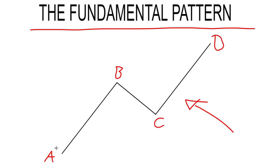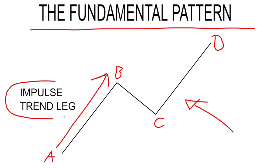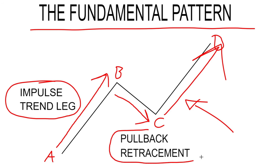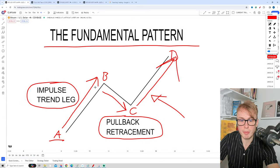Markets tend to move like this. First, we have a relatively sharp move in one direction — in this example, a move towards the upside. This move is usually called an impulse or a trend leg. Following this move, we tend to have a move in the opposite direction that is not as sharp or as strong. This is basically where the market rests before the next impulse to the upside. This move is what we call a pullback or retracement.